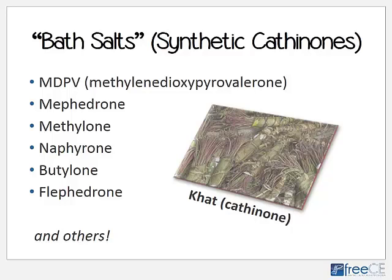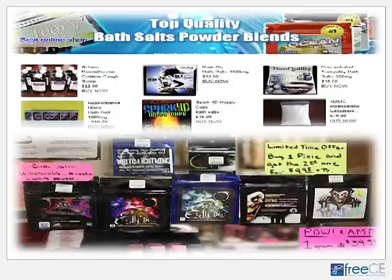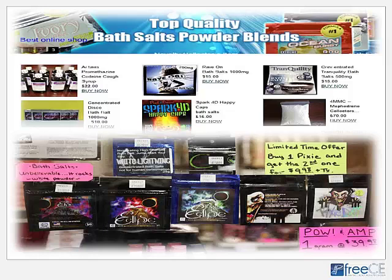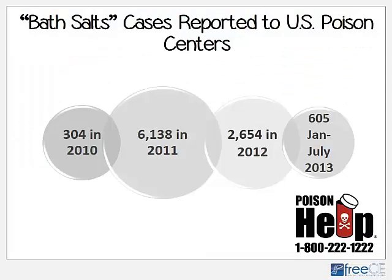Bath salts are synthetic cathinones. There is a plant that grows primarily in eastern Africa called khat (K-H-A-T) that contains a psychoactive compound called cathinone, and these chemicals are synthetic versions. MDPV (methylenedioxypyrovalerone), mephedrone, and methylone were the first three we were seeing, but many more have been identified — naphyrone, butylone, flufedrone, and others. Just like synthetic marijuana products, they were originally sold in head shops, convenience stores, and gas stations, but are now primarily sold over the internet, often on the same websites as synthetic marijuana products.